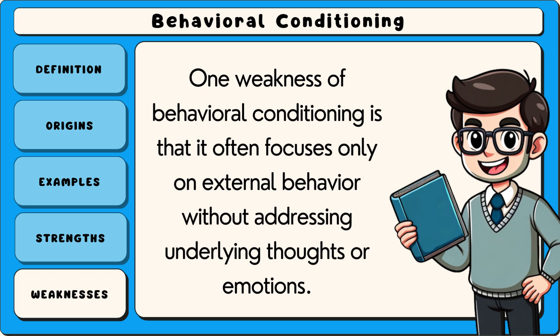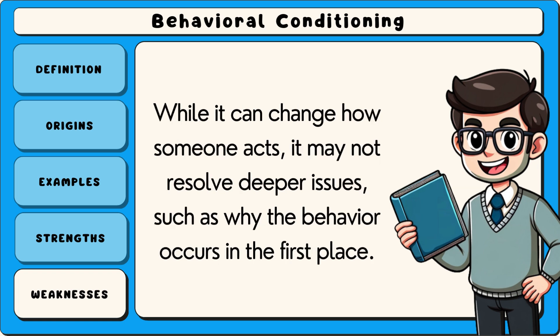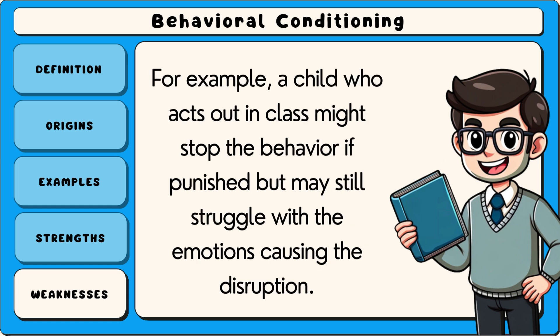One weakness of behavioural conditioning is that it often focuses only on external behaviour, without addressing underlying thoughts or emotions. While it can change how someone acts, it may not resolve deeper issues such as why the behaviour occurs in the first place. For example, a child who acts out in class might stop the behaviour if punished, but may still struggle with the emotions causing the disruption.